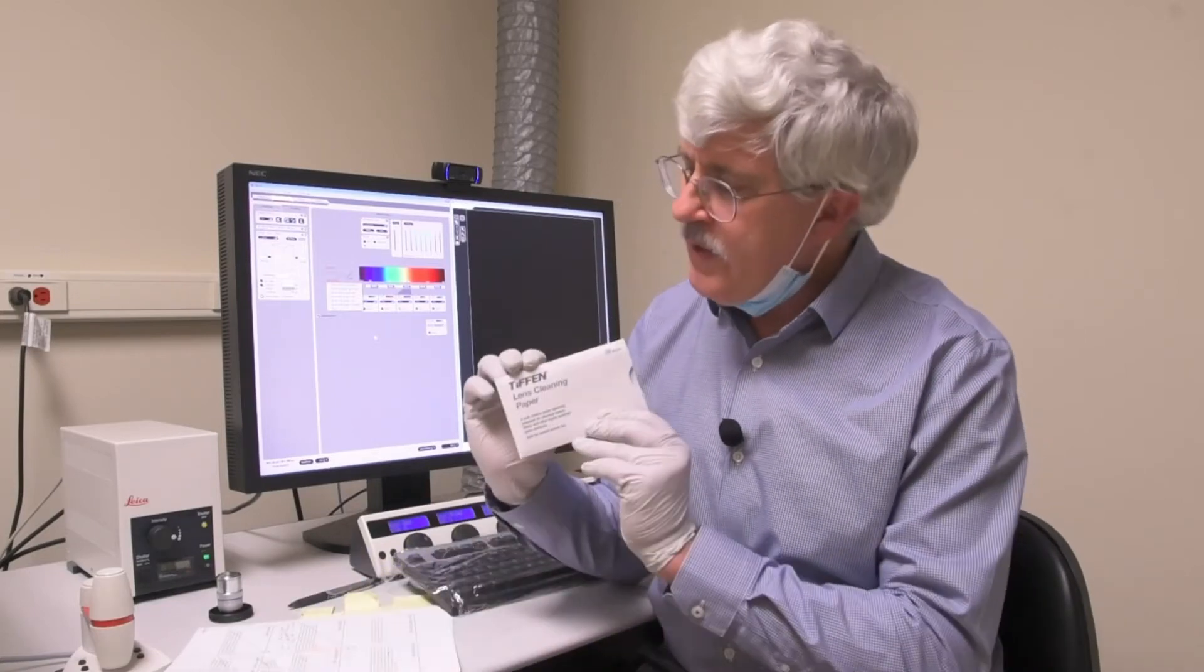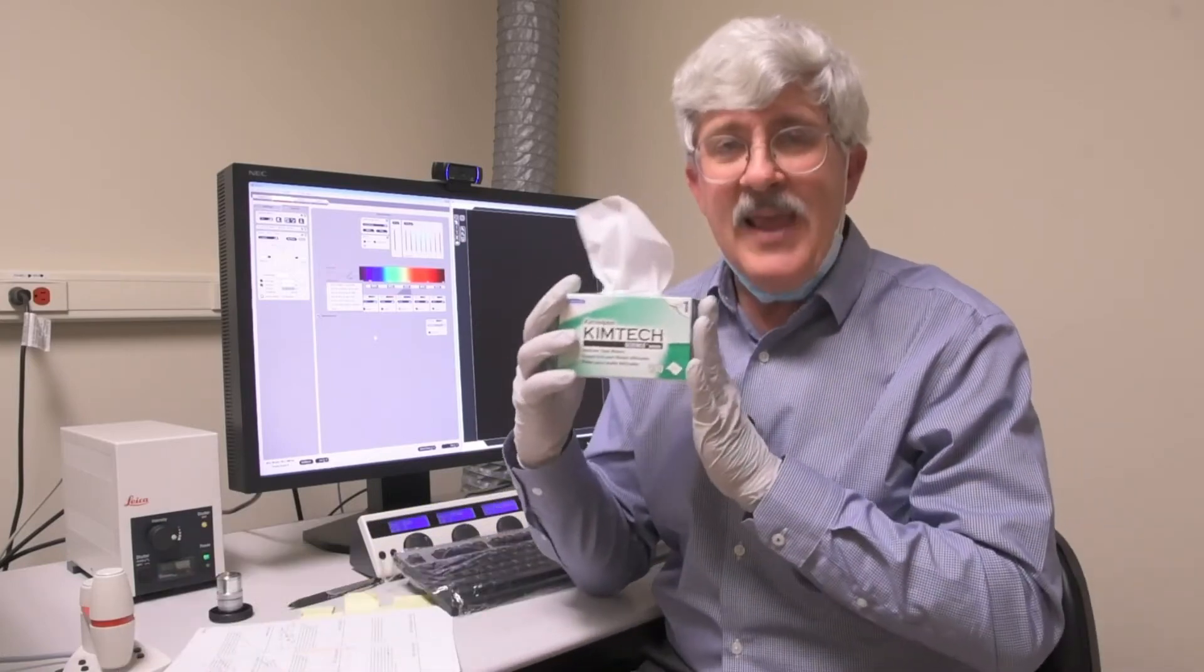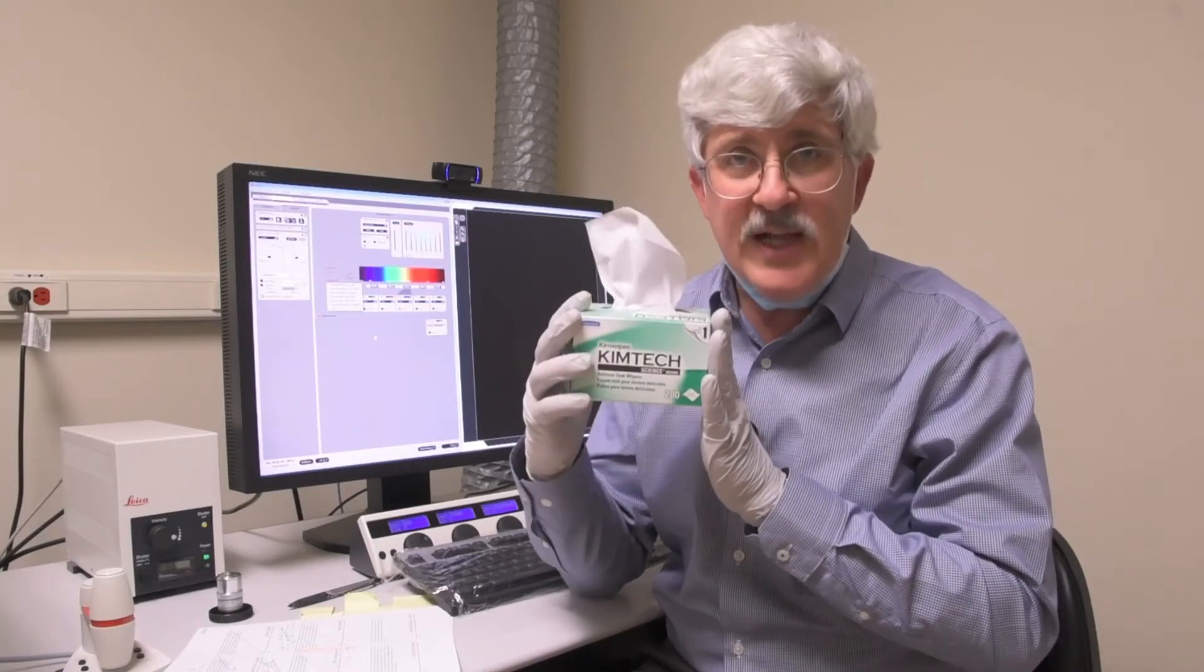I should mention that we do not want you to try to clean any of these objectives yourselves. If you think there is a problem, please let us know and we will take care of it for you. The most you will ever do is just wipe off any excess oil at the end of the day. Don't do anything more than that. When you do, you will only be using lens cleaning paper or lens tissue. Never, never, never use kim wipes on any optical surface on a microscope. You can permanently scratch the objectives.